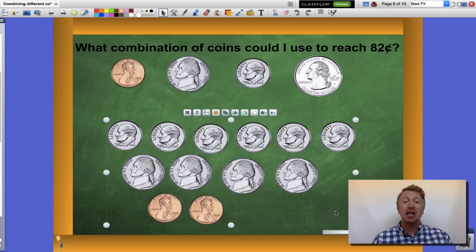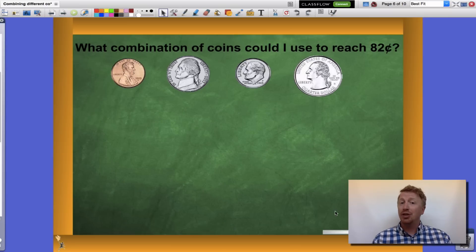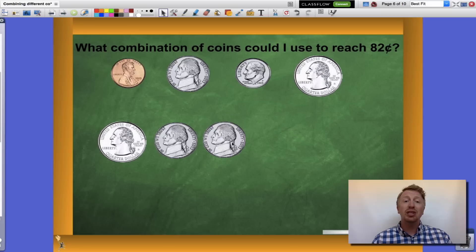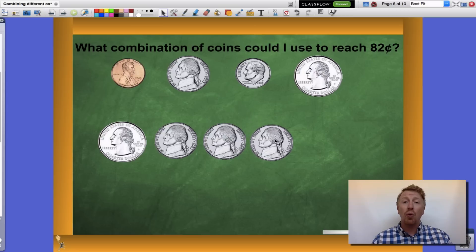Are there any other ways that I can get there? You betcha. What if I had one quarter? Well, one quarter gets me to 25 cents. At that point I could use a nickel to get me to 30 cents, another nickel to get me to 35, another one to get me to 40, and I can use dimes the rest of the way.